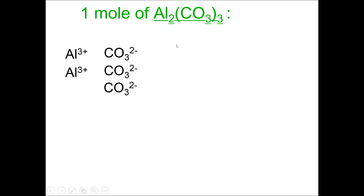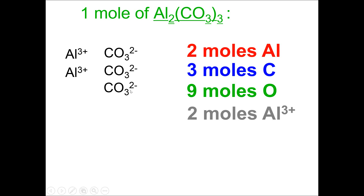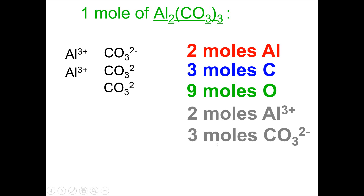If I wanted to describe aluminum carbonate in terms of moles, I could write several ratios. A mole can represent anything — it's just an amount. So if I have 1 mole of aluminum carbonate, I also have 2 moles of aluminum, 3 moles of carbon, 9 moles of oxygen, 2 moles of aluminum ions, or 3 moles of carbonate. These are the same values as before, but now I'm using the word moles — because I'm describing 1 mole of aluminum carbonate. We just want to make sure we understand the vocabulary.